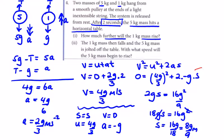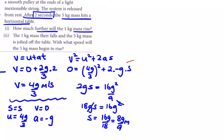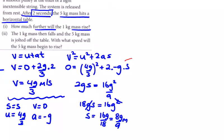The 1 kg mass then falls and the 5 kg mass is jolted off the table. At what speed will the 5 kg begin to rise? This is conservation of momentum: m₁u₁ + m₂u₂ = m₁v₁ + m₂v₂. Since they move together after, we call it v - the same speed.